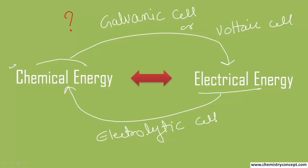So there are two types of electrochemical cells: those which convert chemical energy into electrical energy using spontaneous redox reactions — known as galvanic or voltaic cells — and those which use electrical energy to bring about non-spontaneous redox reactions, known as electrolytic cells.